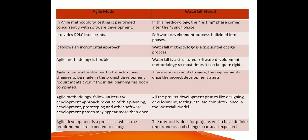The first difference is that in Agile methodology, testing is performed concurrently with software development, whereas in the Waterfall model, the testing phase comes after the development phase. In Agile, testers and developers work together to resolve issues and deliver the sprint, but in Waterfall, the testing phase starts only after the development phase is complete.